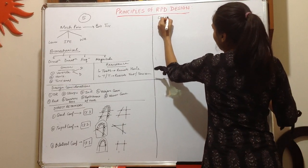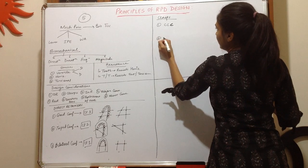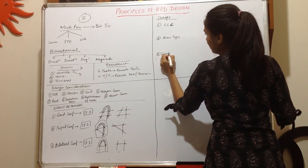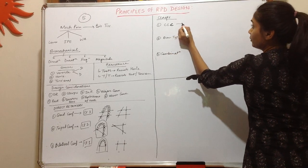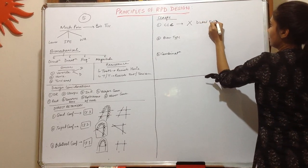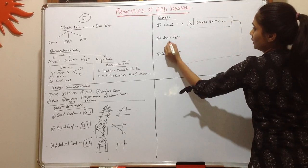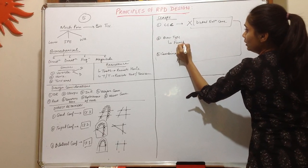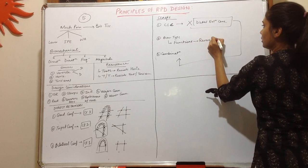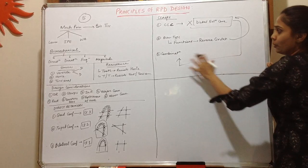Next we have the clasps, which are divided into: cast circumferential clasps, bar-tied clasps, and combination clasps. Cast circumferential clasps are never given in distal extension cases. In distal extension cases, we give the combination clasp. The bar-tied clasp works similarly to the reverse circled clasp, so in distal extension cases we can give either the reverse circled clasp or the combination clasp.